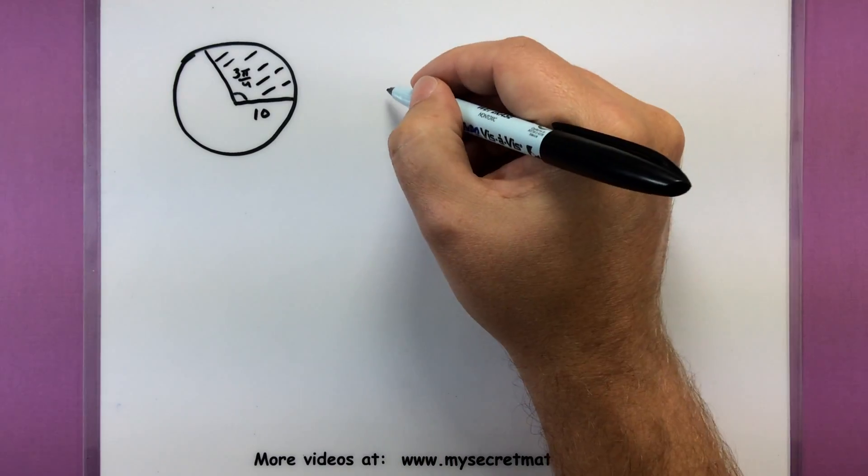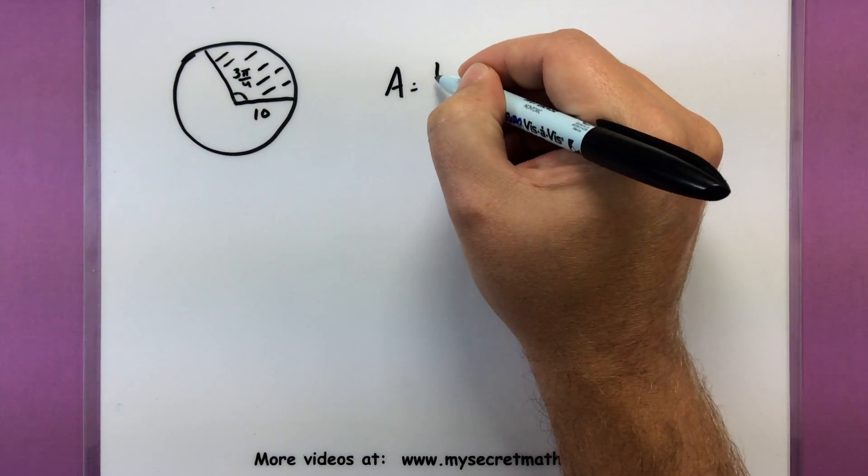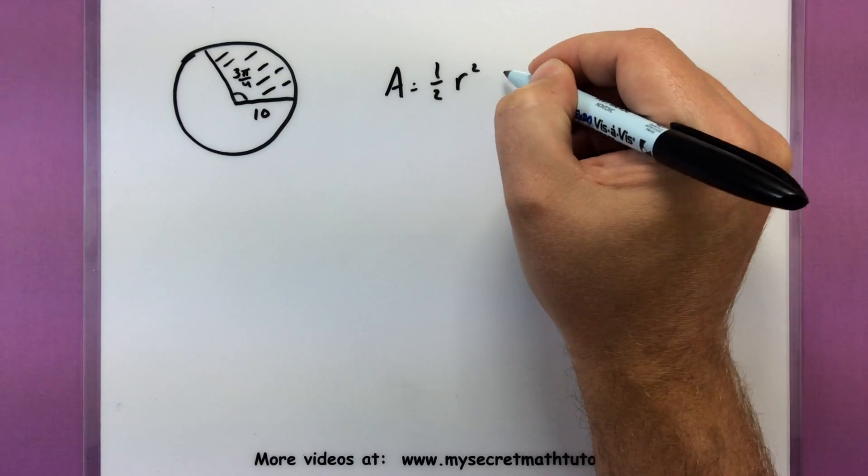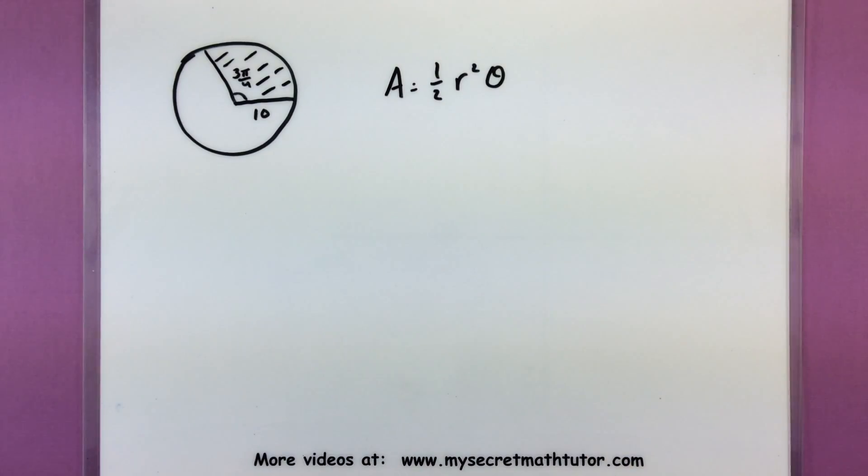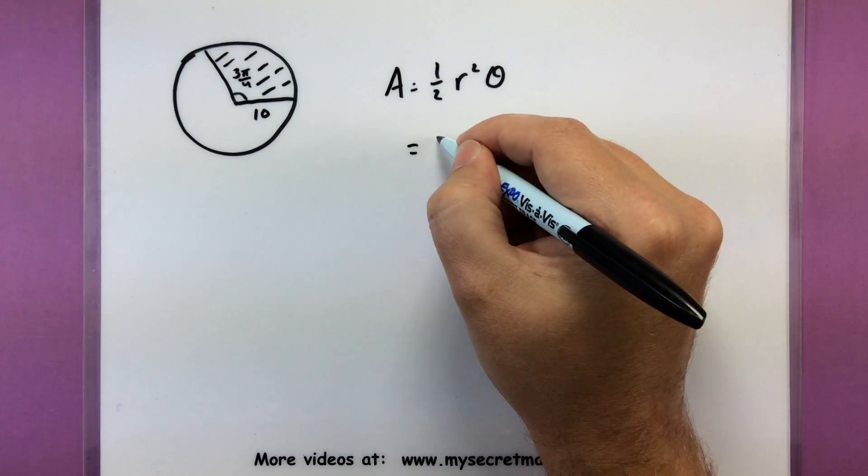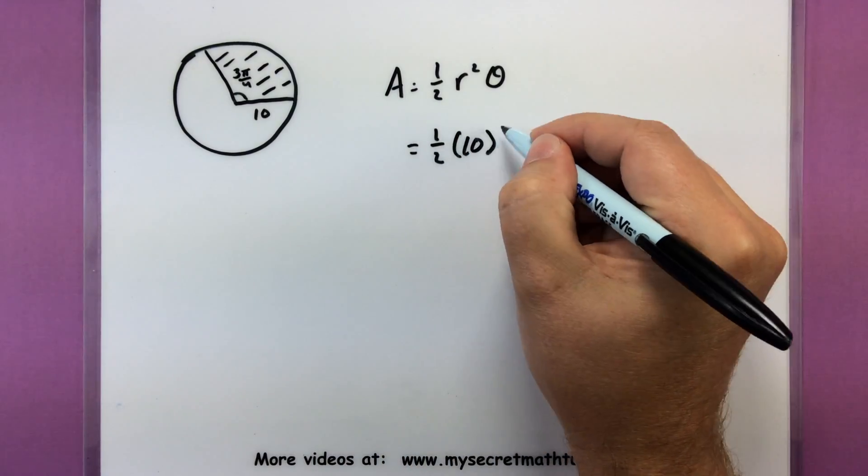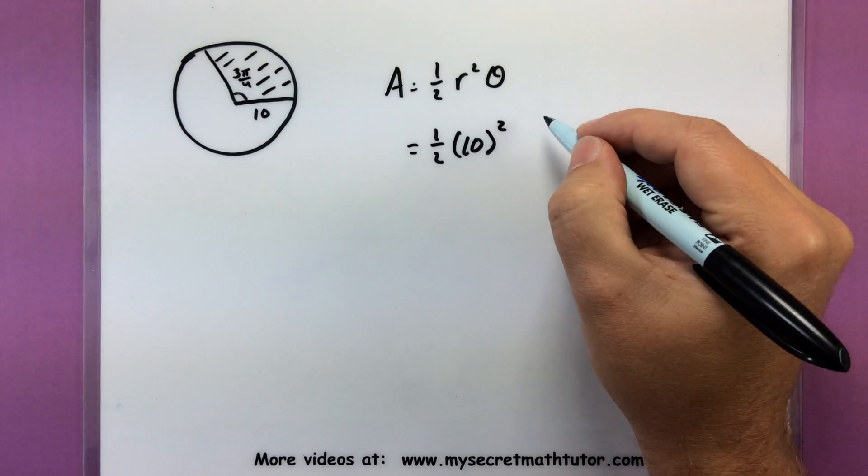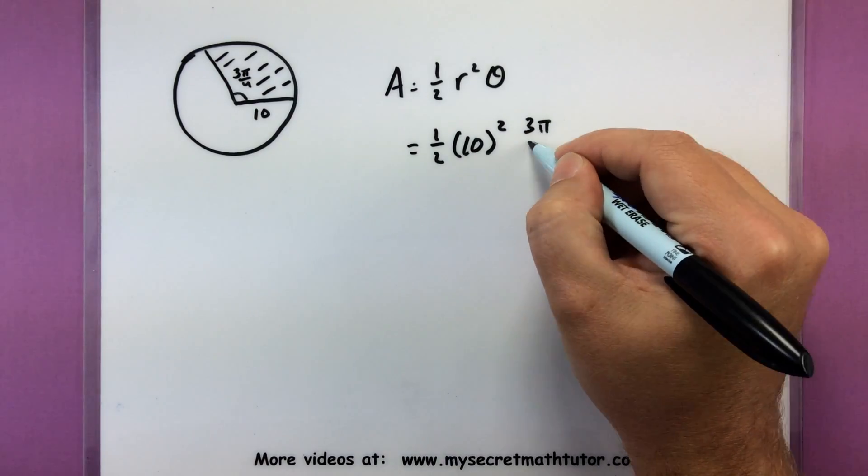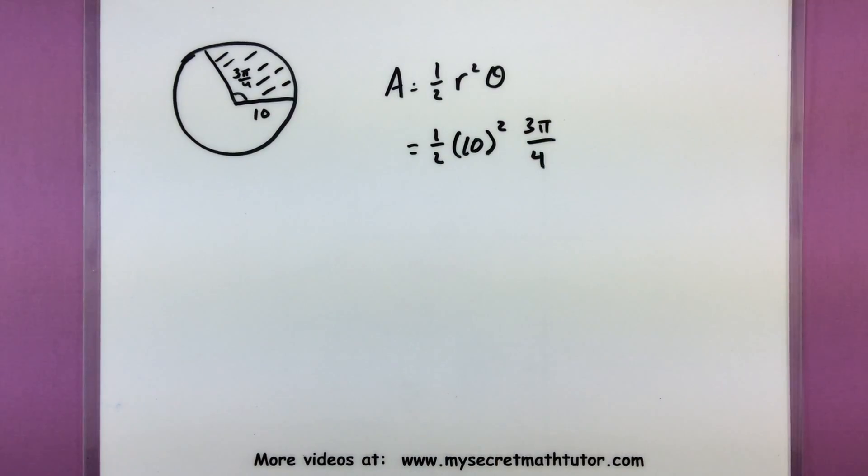So we're going to borrow our formula. Area equals one half times the radius squared times the angle, and start dropping in our information. So for this one our radius is going to be 10, that gets squared, and our angle is already in radians, so we'll go ahead and just leave it as 3π divided by 4.